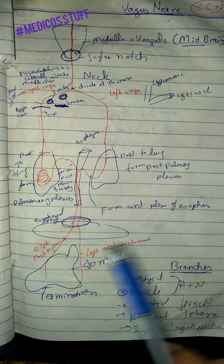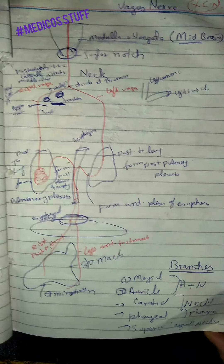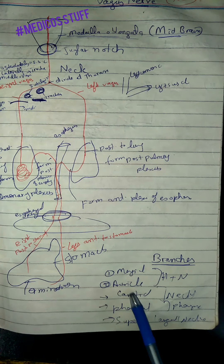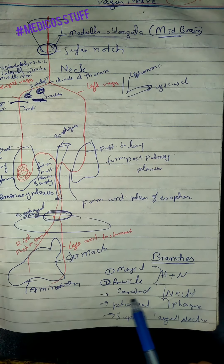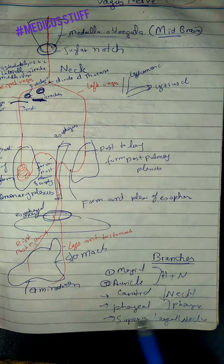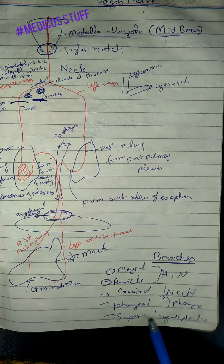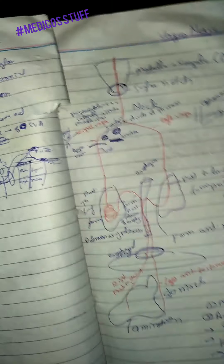Both vagus nerves get their termination in the stomach. The vagus nerve has different branches: the marginal branch and auricular branch which supply the head and neck, the carotid branch to the neck, the pharyngeal branch to the pharynx, and the superior laryngeal branch to the neck.